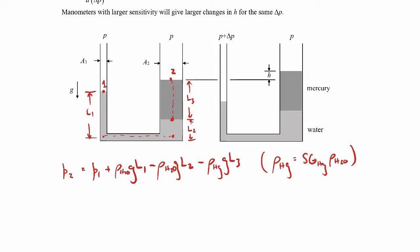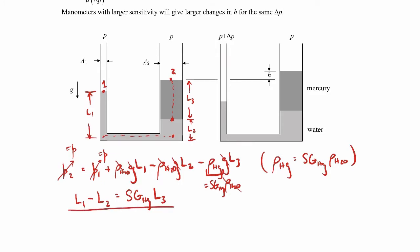Simplifying: P1 and P2 are both equal to P, so they cancel. Rewriting mercury density using specific gravity, the water densities cancel and the gravities cancel. What we're left with is L1 minus L2 equals the specific gravity of mercury times L3. That's the result from the initial situation.